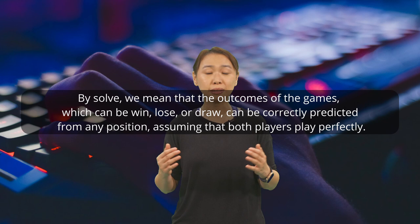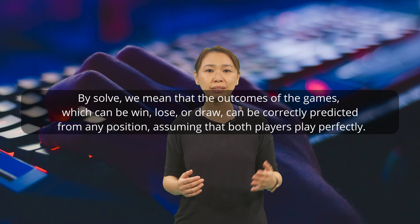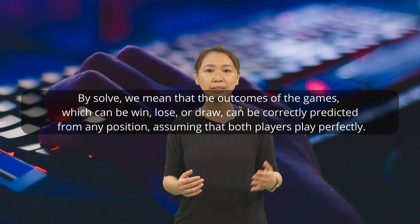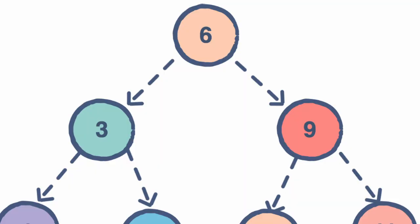By 'solve,' we mean that the outcomes of the game — which can be win, lose, or draw — can be correctly predicted from any position, assuming that both players play perfectly. It was only after over three decades of research on tree search, in 1994, that the checkers player Chinook, which is another program, managed to beat the world checkers champion.